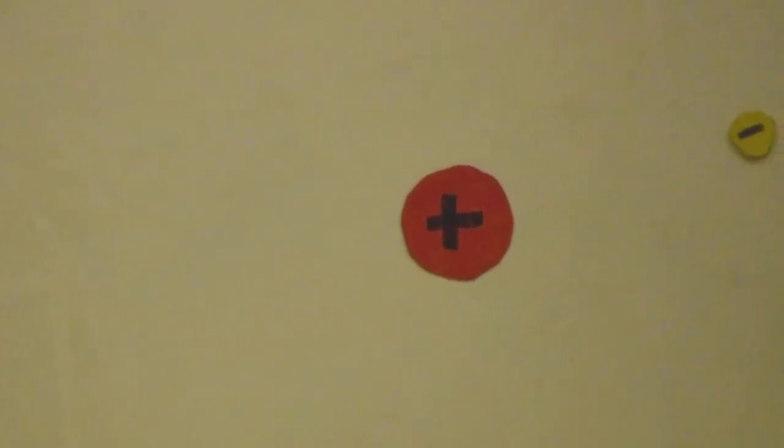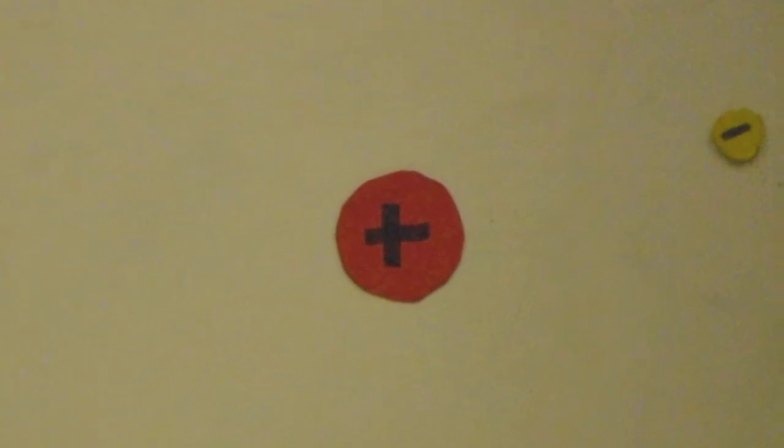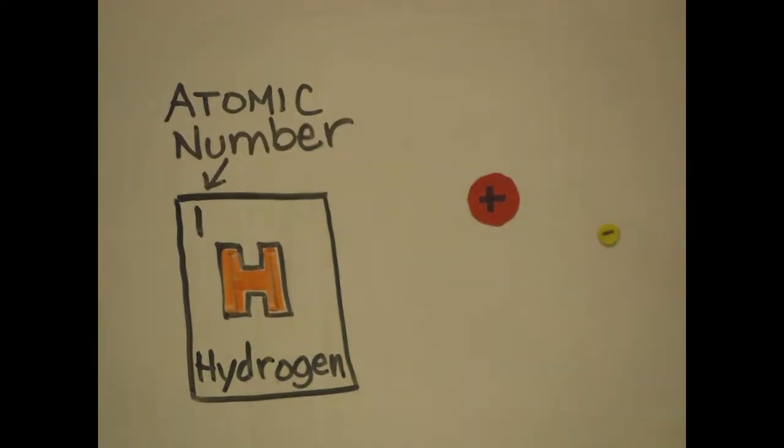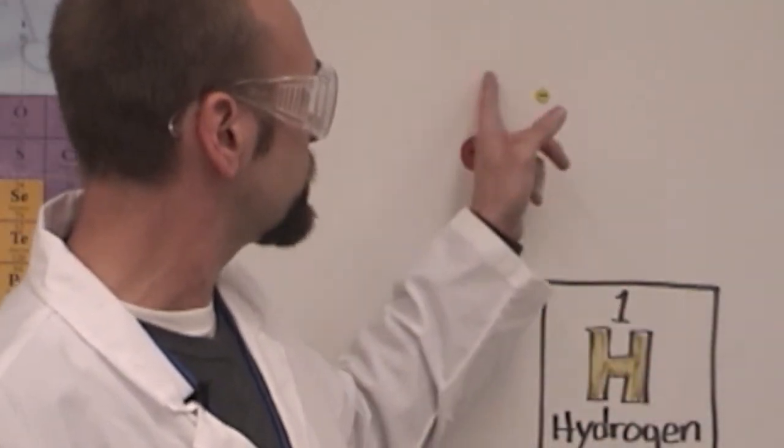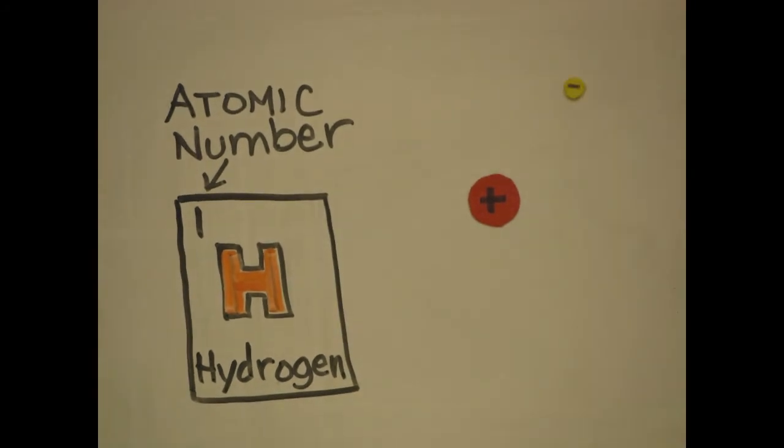The simplest element, hydrogen, has an atomic number of one. This means there's only one proton in the nucleus. Now look at the outside of the atom. Zooming around is a single electron. The negative charge of that electron balances out the positive charge of the proton, giving the atom an overall neutral charge.